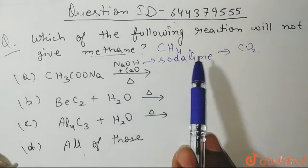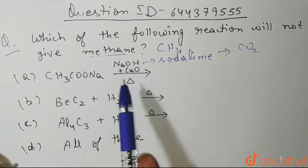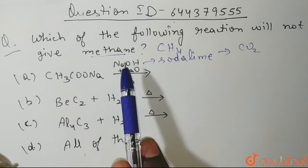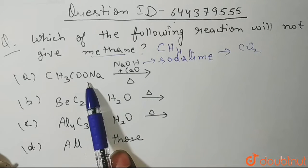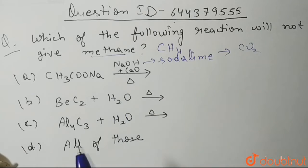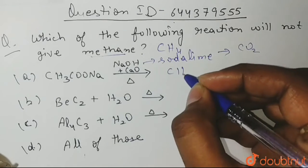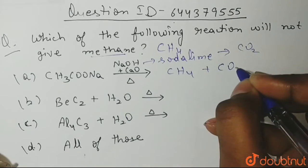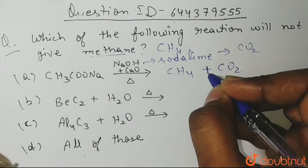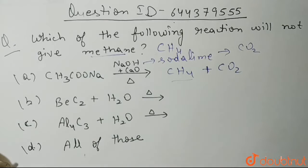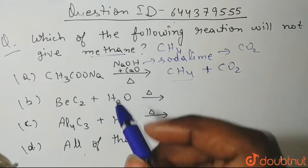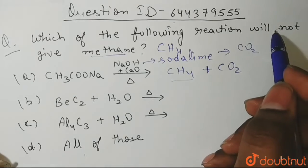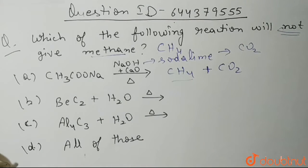Whenever we treat soda lime with sodium acetate and heat it, what do we get? We get our methane molecule and CO2 will be formed. So here we are getting methane. Thus, this is not the correct answer because we need to tell which one will not give methane.